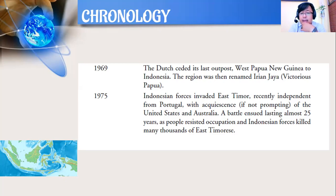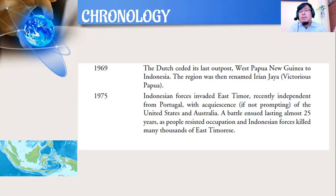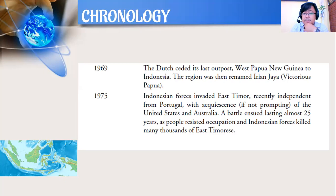In 1969, the Dutch ceded their last outpost, West Papua New Guinea, to Indonesia; the region was then renamed Irian Jaya — 'Victorious Papua.' In 1975, Indonesian forces invaded East Timor, recently independent from Portugal, reportedly with acquiescence if not prompting from the United States and Australia. A battle ensued lasting almost 25 years as East Timorese resisted occupation and Indonesian forces killed many thousands.